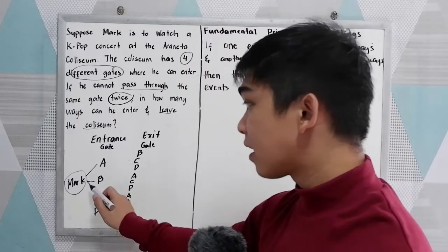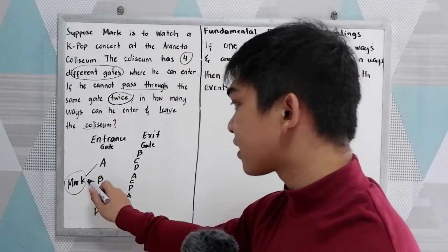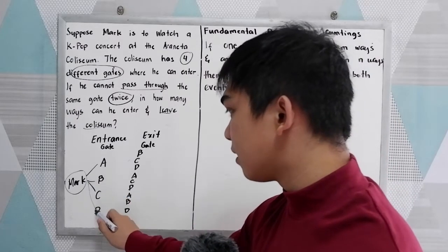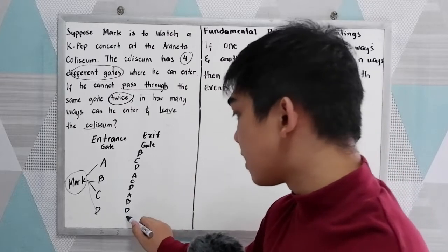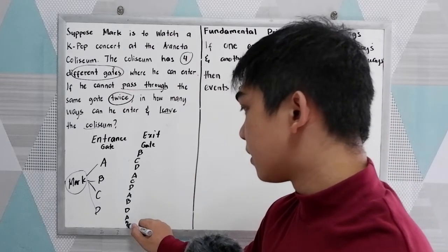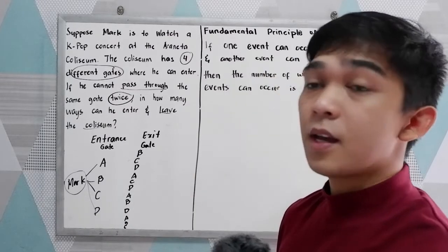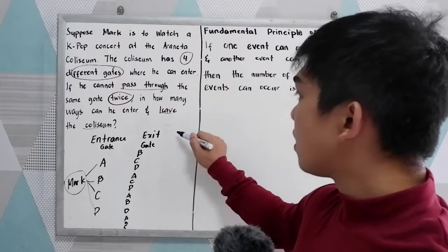And if Mark enters at gate D, the possible exits can be A, B, or C.